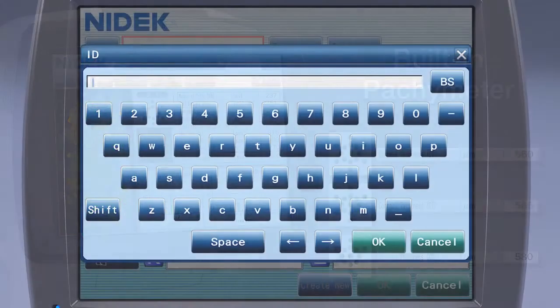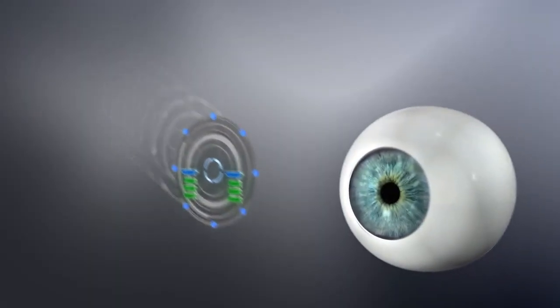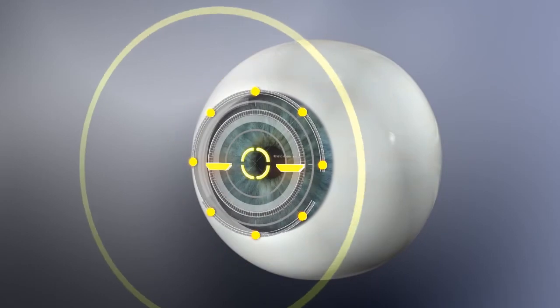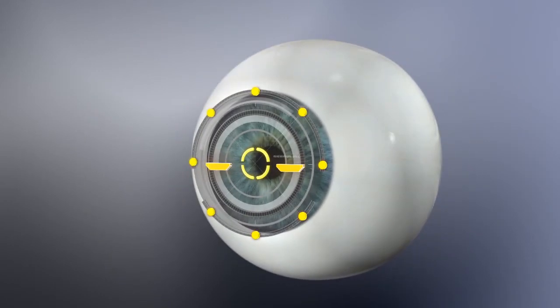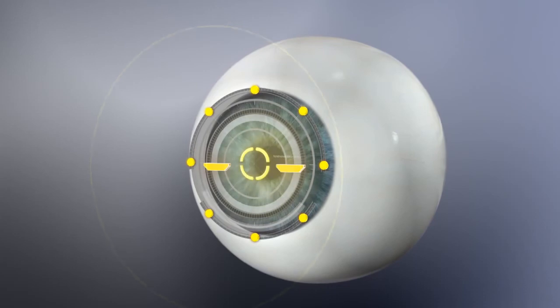Like many of NIDEC's diagnostic devices, the CEM530 includes an intuitive touchscreen and 3D auto-tracking to follow patient movements on the X, Y, and Z axes. The AutoShot feature automatically captures data as soon as correct alignment is achieved.